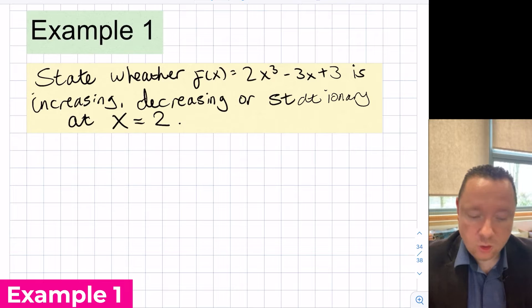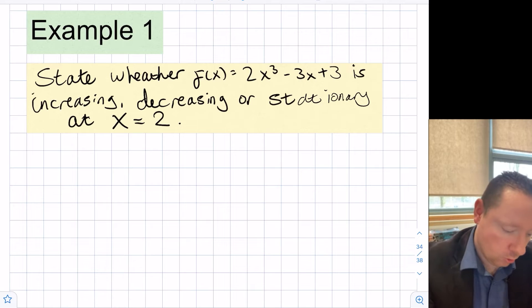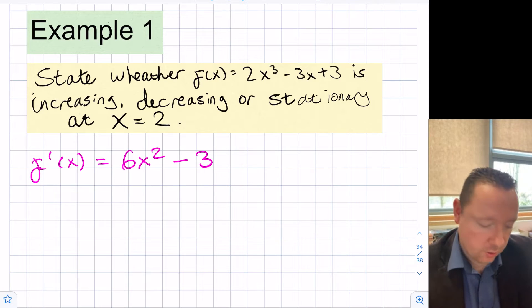Example one says state whether f of x equals 2x cubed minus 3x plus 3 is increasing, decreasing or stationary at x equal to 2. First thing we can do is work out our derivative f dash x. F dash x is 6x squared minus 3.